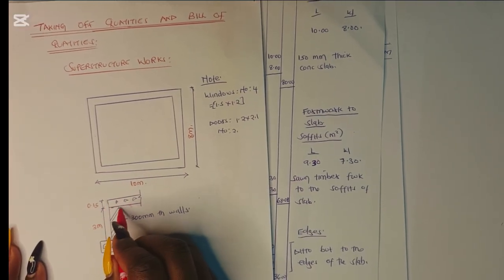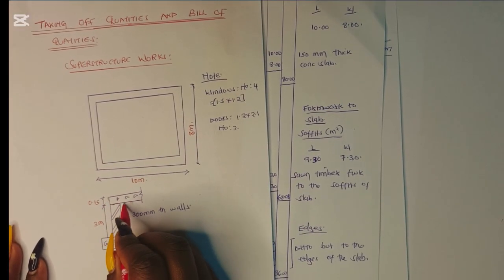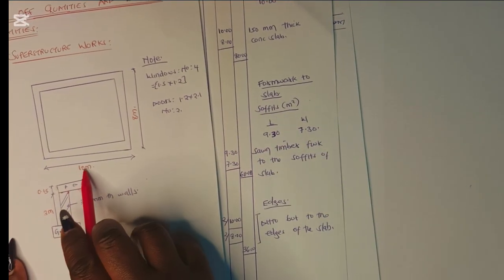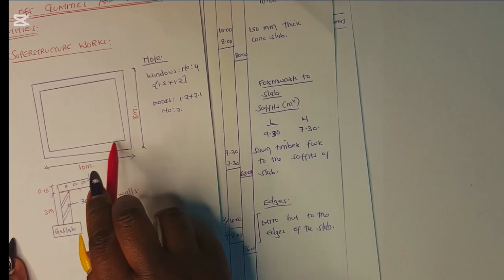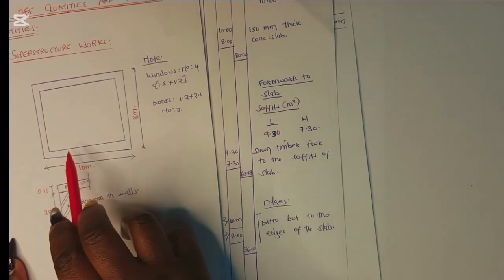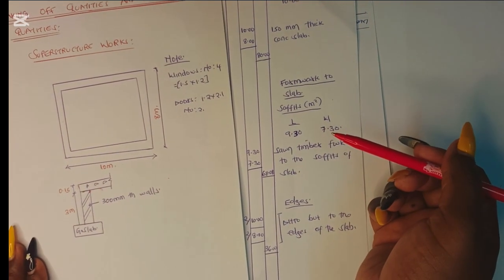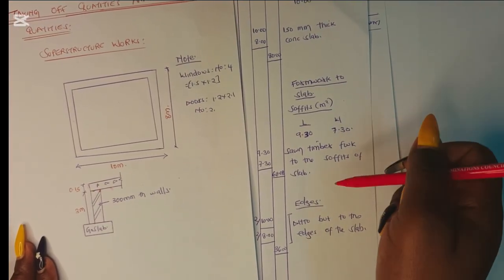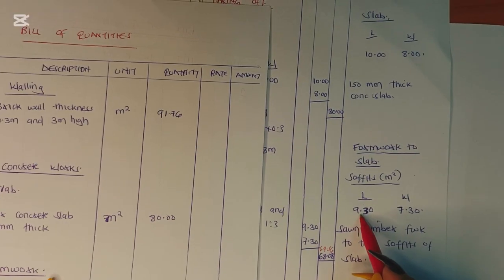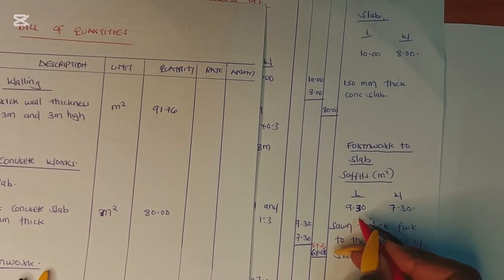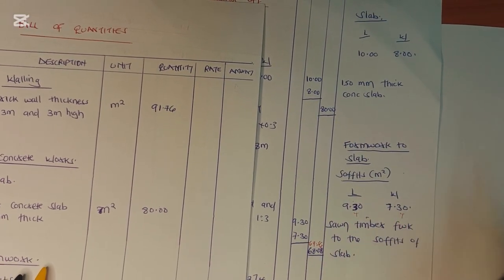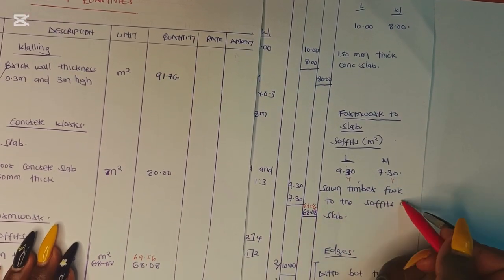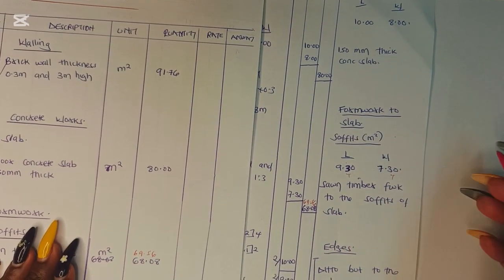For the soffit formwork we use the internal length and internal width because it starts from inside the walls. Our internal length is 10 meters minus 300 mm on each side, and the internal width is 8 meters minus 300 mm on each side. When we subtract those we get 9.4 and 7.4, so 9.4 by 7.4 gives us 69.56 square meters — one timber formwork to the soffit of the slab.